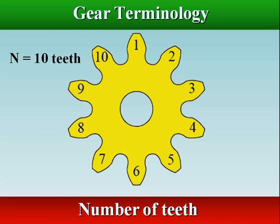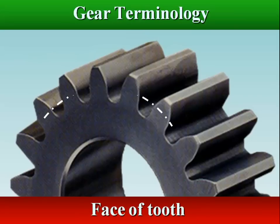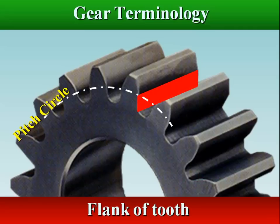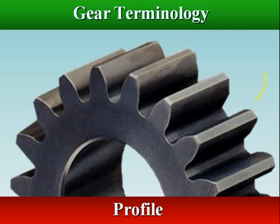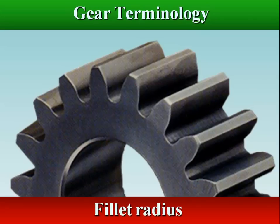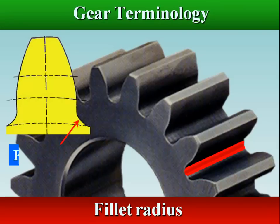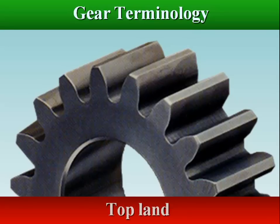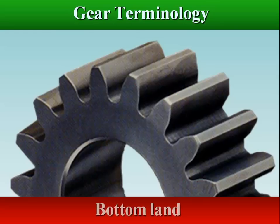Number of teeth denotes the number of gear teeth. Face of tooth is the surface of the gear tooth above the pitch surface. Flank of tooth is the surface of the gear tooth below the pitch surface. Profile is the curve formed by the face and flank of the tooth. Fillet radius is the radius that connects the root circle to the profile of the tooth. Face width is the width of the gear tooth measured parallel to its axis. Top land is the surface of the top of the tooth. Bottom land is the surface at the bottom of a gear tooth space adjoining the fillet.